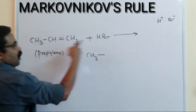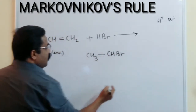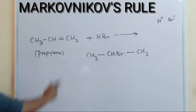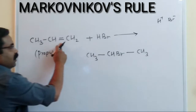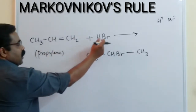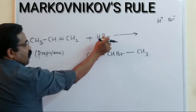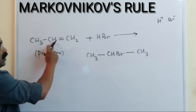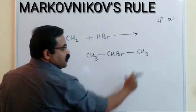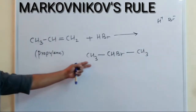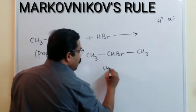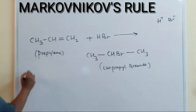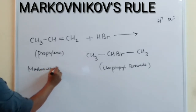So Br is added to this carbon, giving CH3-CHBr, and the remaining H goes to the other carbon, giving CH3. The double bond breaks to a single bond. According to Markovnikov rule, Br goes to the carbon with fewer hydrogens and H goes to the other, giving us CH3-CHBr-CH3. This product is isopropyl bromide. This reaction is an example of Markovnikov's rule.